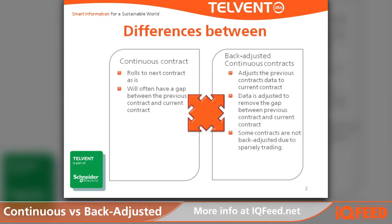The main differences between the two continuous contracts: the continuous contract rolls to the next contract as-is and will often have a gap between the previous contract and the current contract, while the back-adjusted contract will adjust the previous contract's data to the current contract. Data is adjusted to remove the gap between the previous and current contracts, and also some contracts are not back-adjusted due to sparse trading.